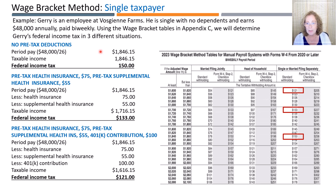We also need to find the table that shows bi-weekly payroll. Then we locate the correct marital status column and the correct wage row. For Jerry, we need to find the row that includes his wage of $1,846.15, which is the row that starts with $1,840 and ends with wages less than $1,860. Then we move to the right until we find the standard withholding column for single taxpayers and we find $150.